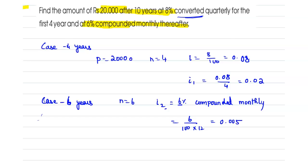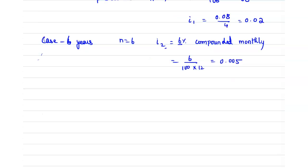So from this, total amount can be compounded at the end of 10 years is equal to P times (1 plus i1) to the power n1 multiplied by (1 plus i2) to the power n2.